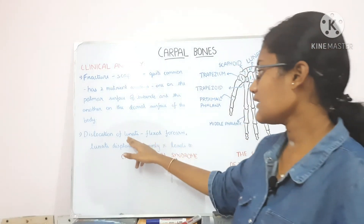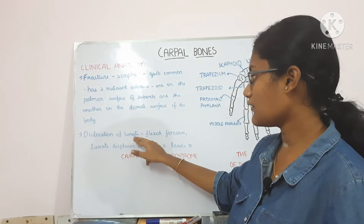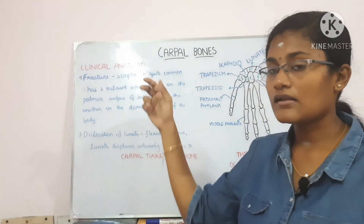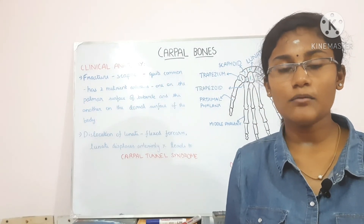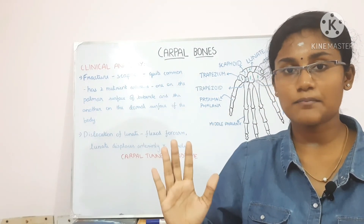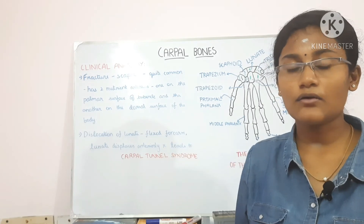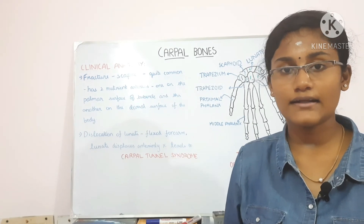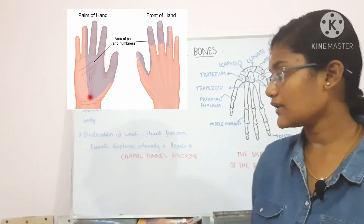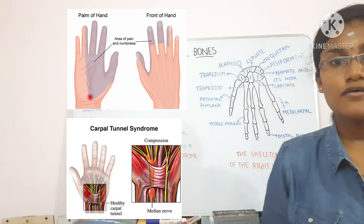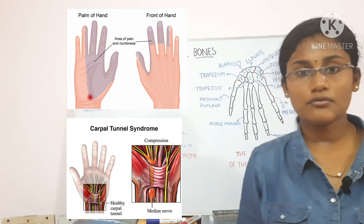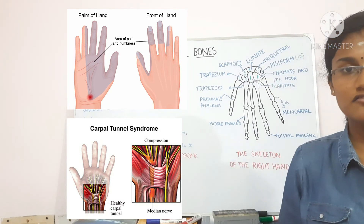The dislocation of the lunate happens when we fall with the flexed forearm and a dorsiflexed palm, and the lunate displaces anteriorly. This leads to the carpal tunnel syndrome. For better visualisation, you can look at the image.